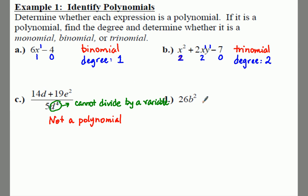Finally, for our D, 26b², we don't have any pluses or minuses. So this would be a monomial. And its degree is just two. So we have a degree of two, once again. So that is how you can identify polynomials and determine their degrees.